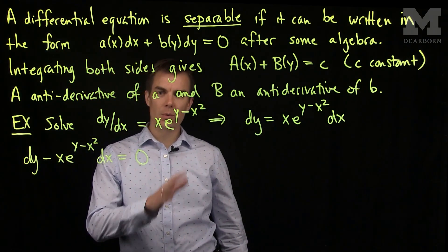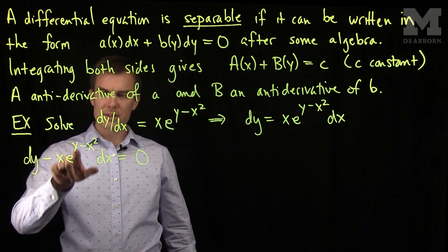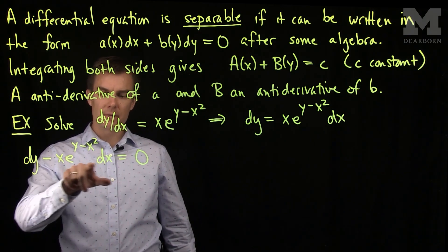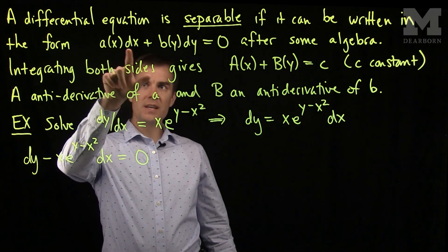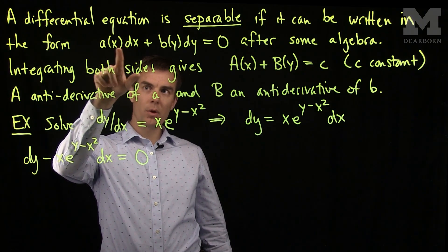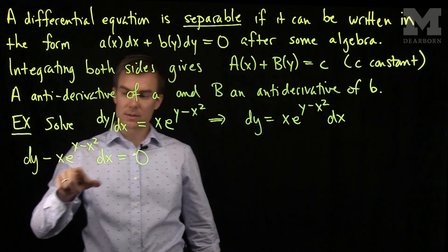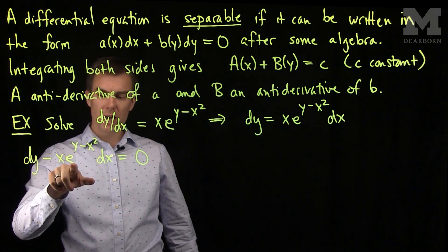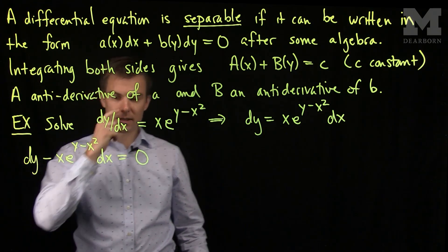It almost looks like we have what we want, but there's this e^y that's in front of the dx term. The dx term in my differential equation, to be separable, must only contain x's. So, I will multiply both sides of this equation by e^(-y).